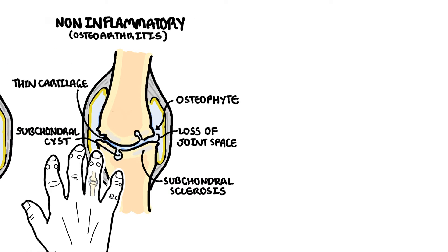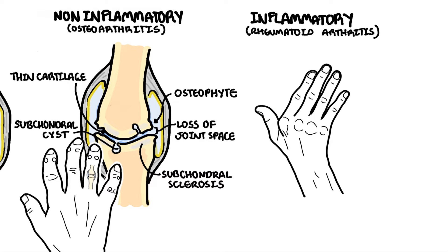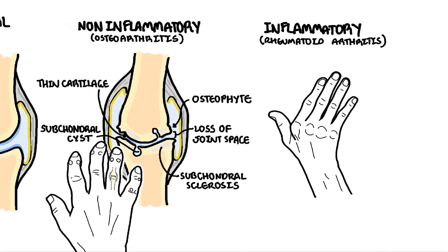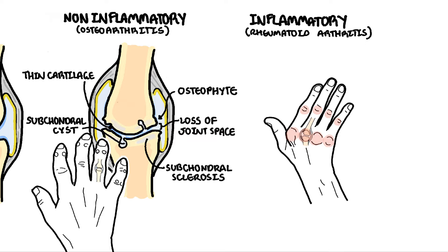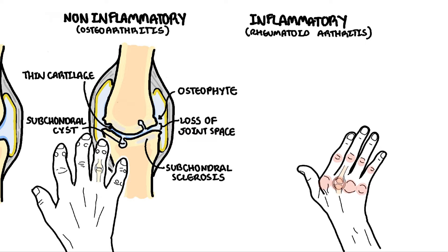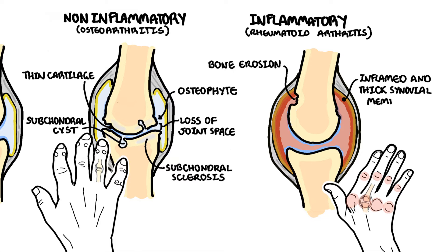Inflammatory arthritis, such as rheumatoid arthritis, is much more aggressive and can cause deformities if not treated appropriately. Here are hands of someone with advanced rheumatoid arthritis. A joint that is actively inflamed can cause bone erosions eventually. There is inflammation and thickening of the synovial membrane, causing a tender, painful, and red joint.